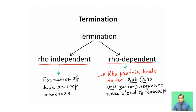The rho protein inhibits or interferes with the movement of RNA polymerase, stopping the transcription process and causing termination. The helicase activity of rho protein then releases the transcript from the DNA template.